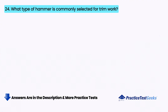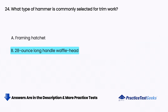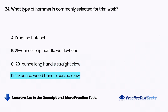What type of hammer is commonly selected for trim work? A. Framing hatchet, B. 28-ounce long handle waffle head, C. 20-ounce long handle straight claw, D. 16-ounce wood handle curved claw.